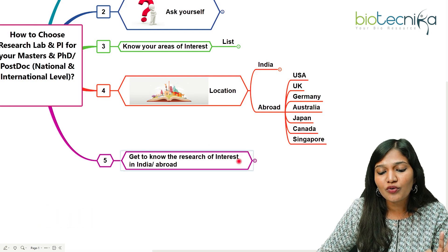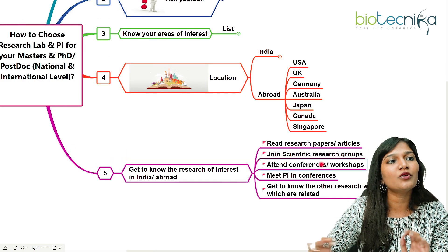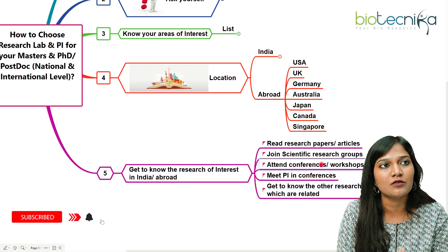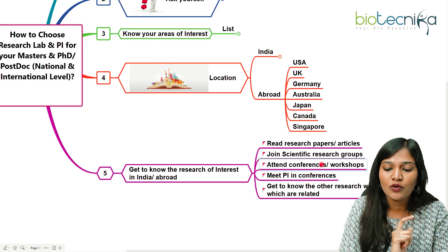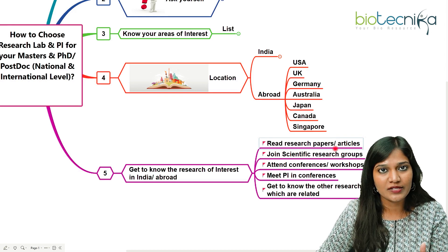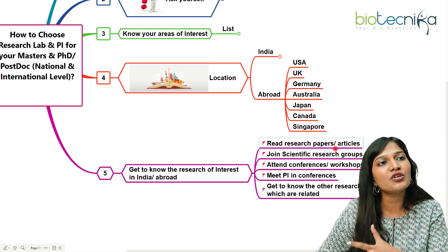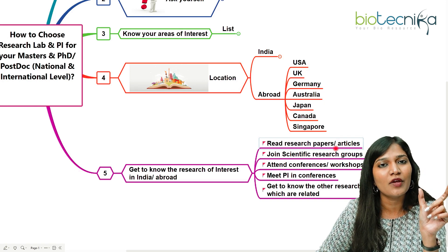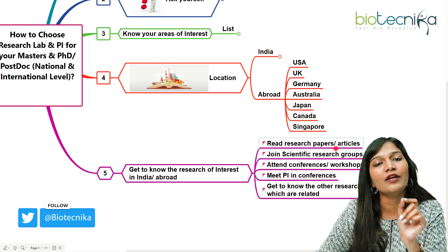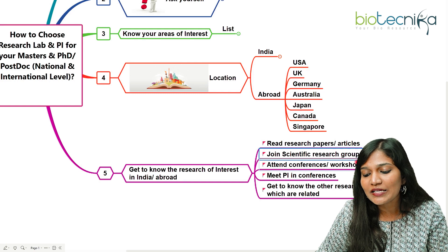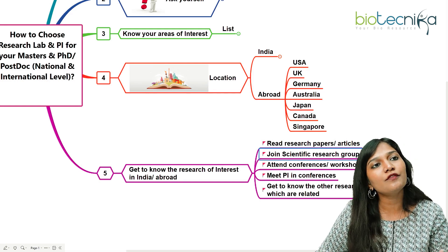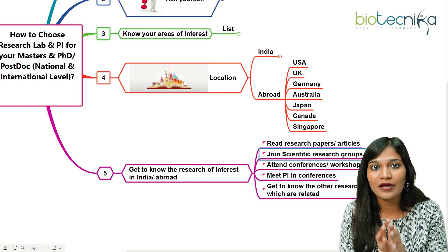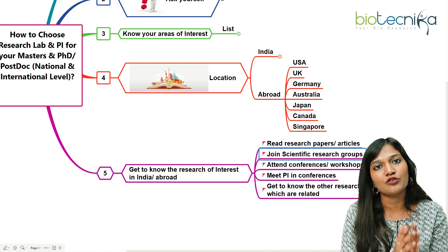The next important step is to get to know the research of interest in India and abroad. Suppose you're interested in oncology — read research papers related to your specific topic, like breast cancer. As you read, you'll notice certain PIs who keep publishing a lot of papers in that specific area. Pick up those PIs' names, note where they work — India or abroad — and list them. You can also join scientific research groups, work as a project assistant, or do a summer internship to get an idea of what type of research that lab is doing.